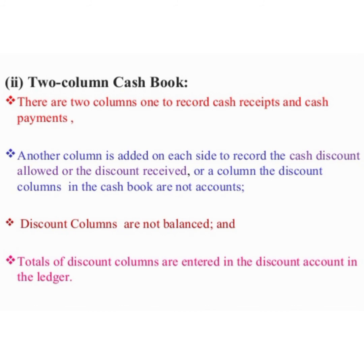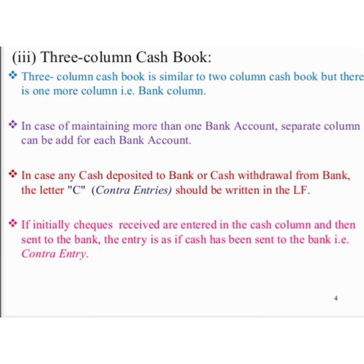The bank issues blank check forms to account holders for withdrawing money. The depositor writes the name of the party to whom payment is to be made after the word 'pay' printed on the check. Check forms have the printed word 'bearer', meaning payment is made to the person named or the bearer. When the word 'bearer' is struck off by drawing a line, the check becomes an order check, meaning payment is made only to the person whose name is written on the check or to his order after proper identification.